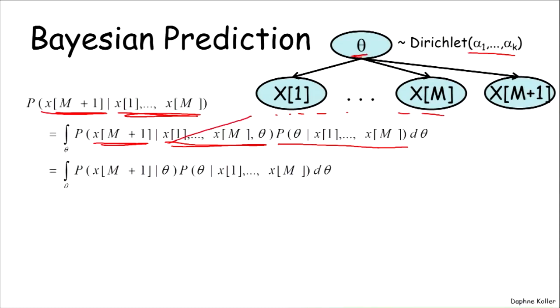And so we can cancel these from the right-hand side of the conditioning bar, which gives us over here probability of xm plus 1 given theta. And over here we have the probability of theta given x1 up to xm.